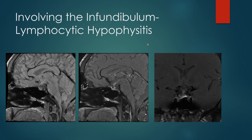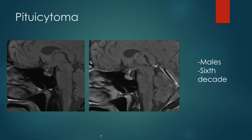For disease processes involving the infundibulum, think of lymphocytic hypophysitis — you'll see thickening and heterogeneous enhancement of the infundibulum itself rather than the pituitary gland, thickened and enhancing throughout its course. A pituitary cytoma is a relatively rare benign mass that presents in men in their sixth decade. You'll see nodularity along the pituitary infundibulum that matches the signal of the pituitary gland; it may or may not enhance, it is well-circumscribed, and when followed over time it never changes. You need the correct patient population and these specific imaging characteristics to call a pituitary cytoma.